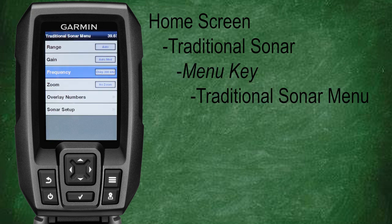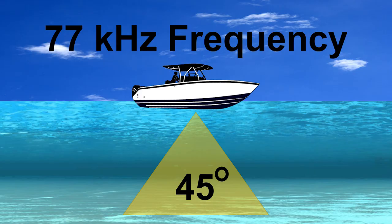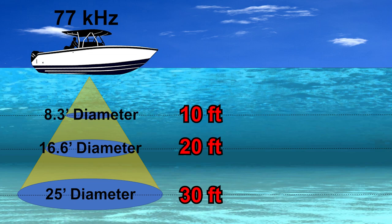From the traditional sonar screen, press the menu key to bring up the menu options for the traditional sonar screen, then scroll down and select frequency. Here you'll see a few options: 77,000 Hz chirp, 200,000 Hz chirp, standard 77,000 Hz, and standard 200,000 Hz. The 77 kHz frequency cone angle is about 45 degrees, while the 200 kHz frequency cone angle is roughly 15 degrees. In 30 feet of water with the 77 kHz selection, our sonar cone will cover an area of about 25 feet in diameter, but since our sonar is a cone, coverage is actually only about 16.6 feet at 20 feet of water, and roughly 8.3 feet in 10 feet of water.